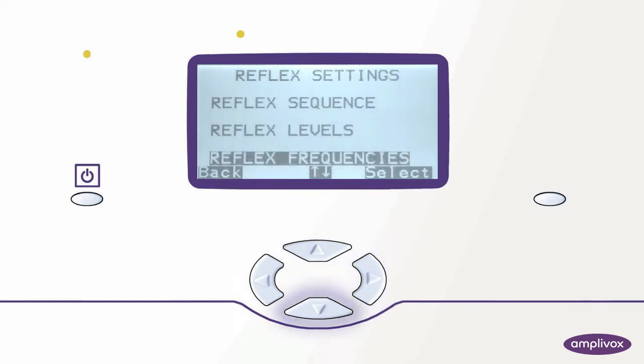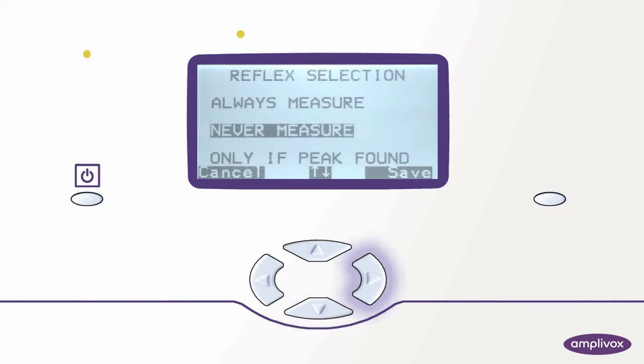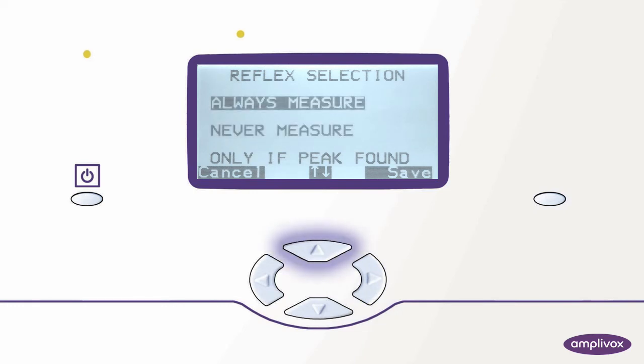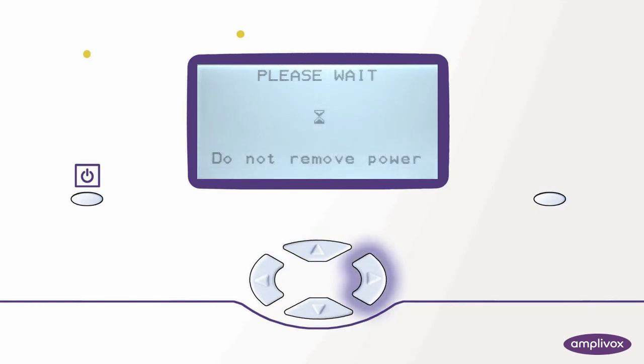Now comes the most important part as we now really add our ipsilateral reflexes to the profile. In reflex selection the selection is set never measured but we always want to measure the reflexes. And again we select the right key to save our selection.